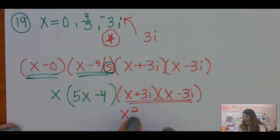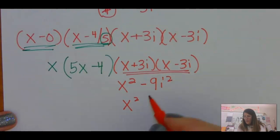So I'm going to FOIL that out. x squared minus 3i plus 3i minus 9i squared. So remember, i squared is a negative 1, so that's just x squared plus 9.